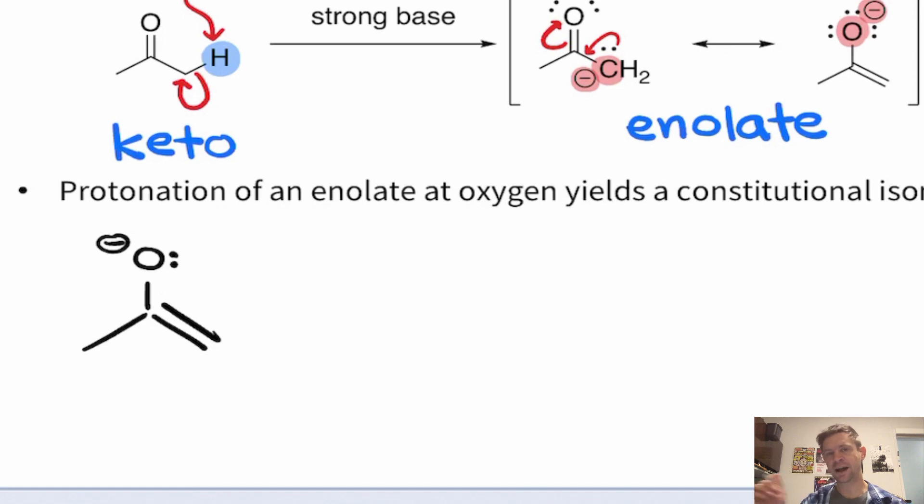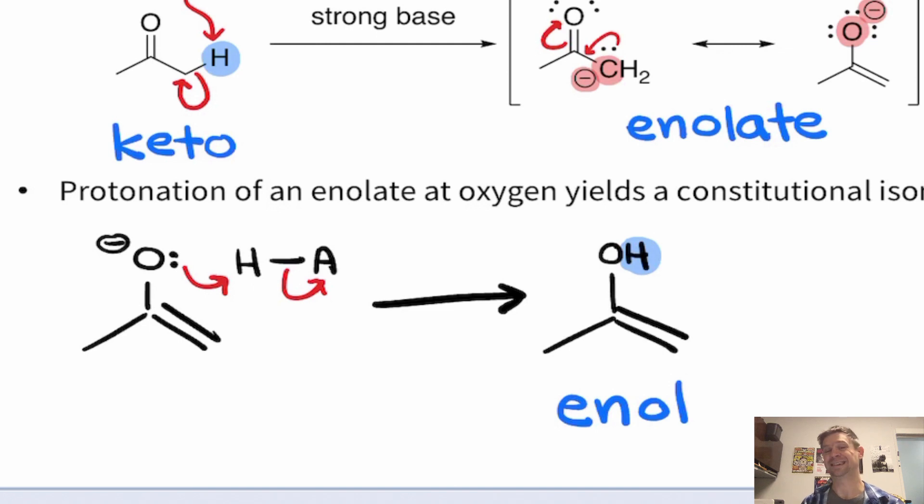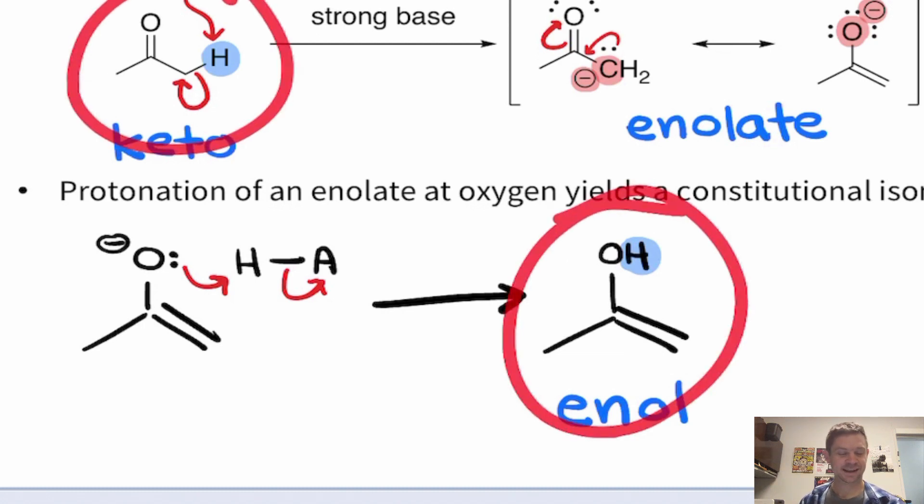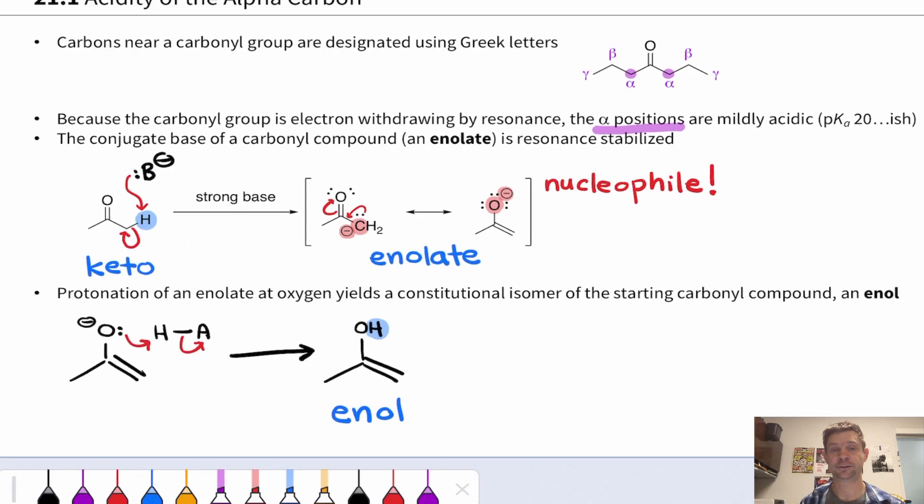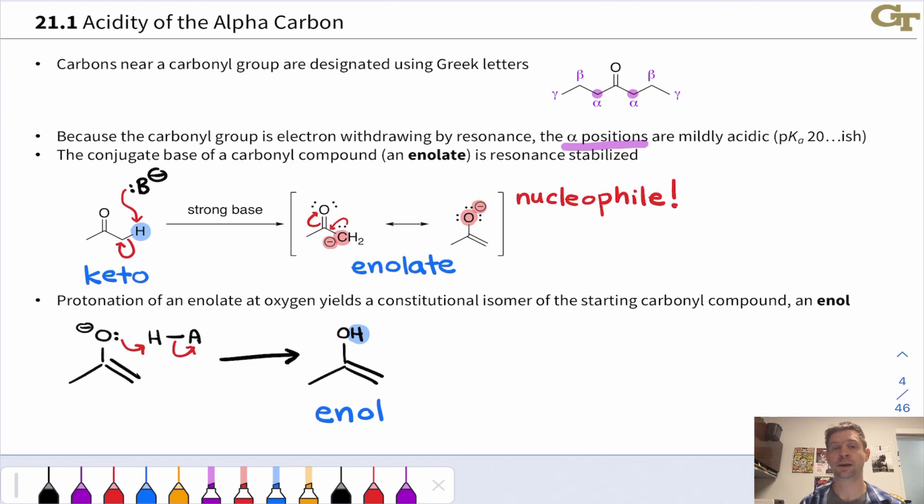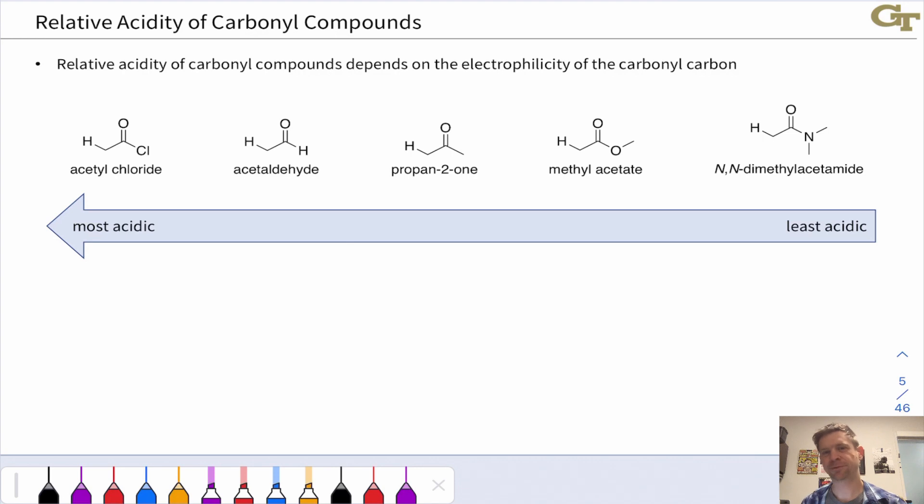We can protonate the enolate, not at the alpha carbon, where the original proton was removed. And that is a possibility, but we'll get us back to the keto form. We can also protonate at the carbonyl oxygen. And this leads to a structure known as an enol. It's called an enol because we have the CC double bond, en, and we have the OH group, the origin of all. And the enol is isomeric with the keto form. This is worth pausing and checking on your own. Count the atoms in these two molecules and make sure that you can see that they are indeed isomers. And this isomerization from the keto to enol form is very rapid, since it just involves two proton transfers, right? For example, in base, we deprotonate first and then put the proton back on. And so, thinking about keto enol equilibrium in a carbonyl context turns out to be very important.